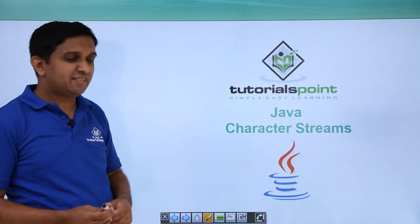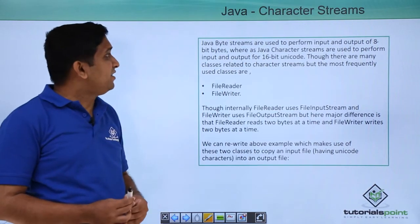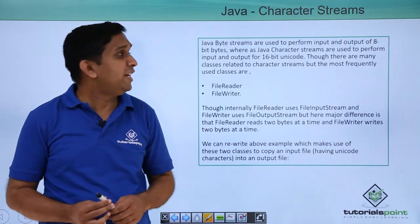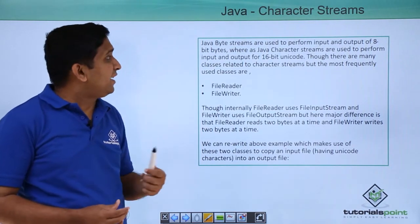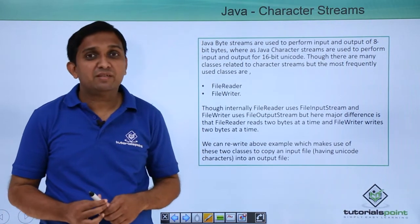Hello friends, we will see the character streams in Java. Now byte streams that we have seen perform input and output of 8 bits at a time. The character streams can perform input output of 16-bit unicode at a time.